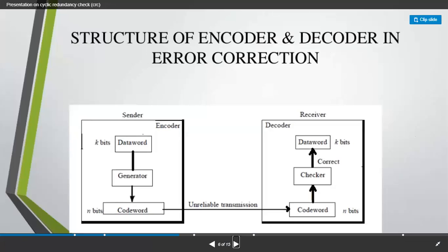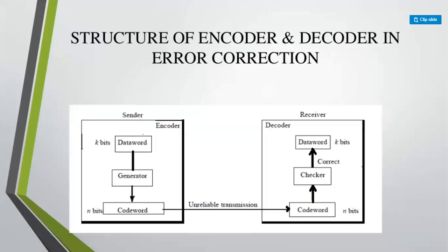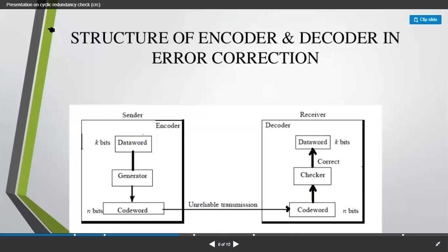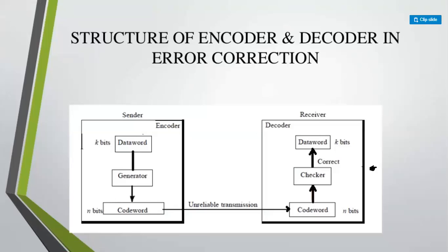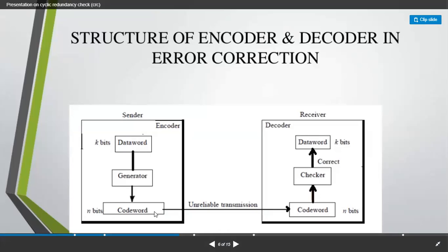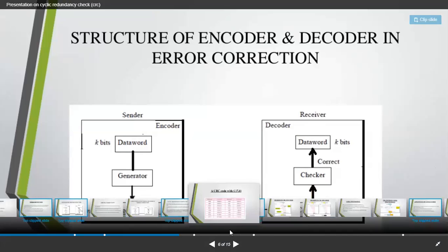Here we can see the structure of encoder and decoder in error correction — how you are going to encode or decode the data. This is the sender part where you encode the data, and you decode the data towards your receiver end. If there is any discarded error value or any error in the data, then you retransmit. Once inside the checker, if it finds that the received data is the perfect one, it will send the acknowledgement as correct, and it is going to be received at the receiver end.